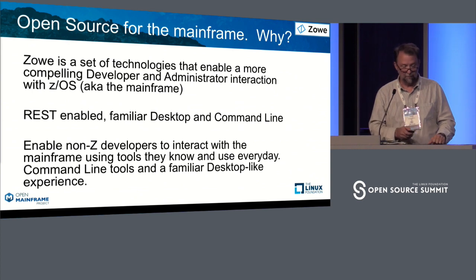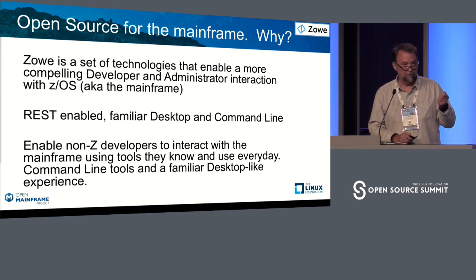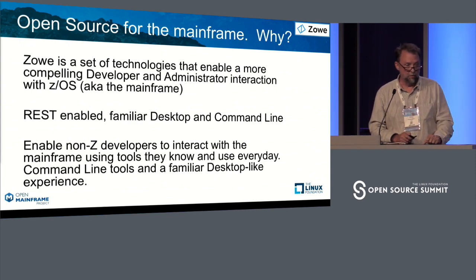We came up with this idea: CA had a technology that's a CLI, IBM had some REST APIs, and Rocket had a web UI.